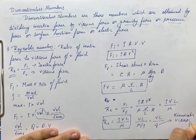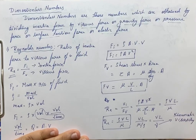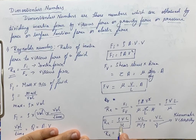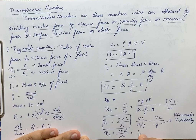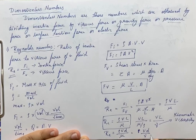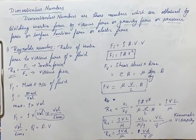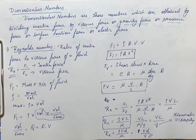In pipe flow, the Reynolds number is expressed as rho V D divided by mu, or V D divided by nu, where the characteristic length L is replaced by the diameter D of the pipe.